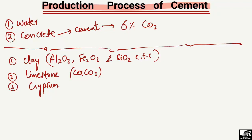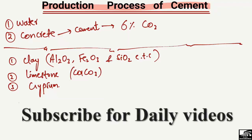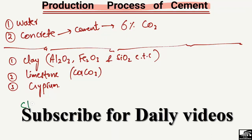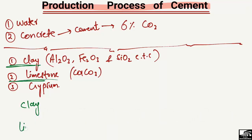Now, how cement is produced — I will explain in a simple and easy way. Clay and limestone are taken together, combined, and heated up to 1450 degrees centigrade. They are combined and heated to this temperature, and then they form a new material — we call it clinker.